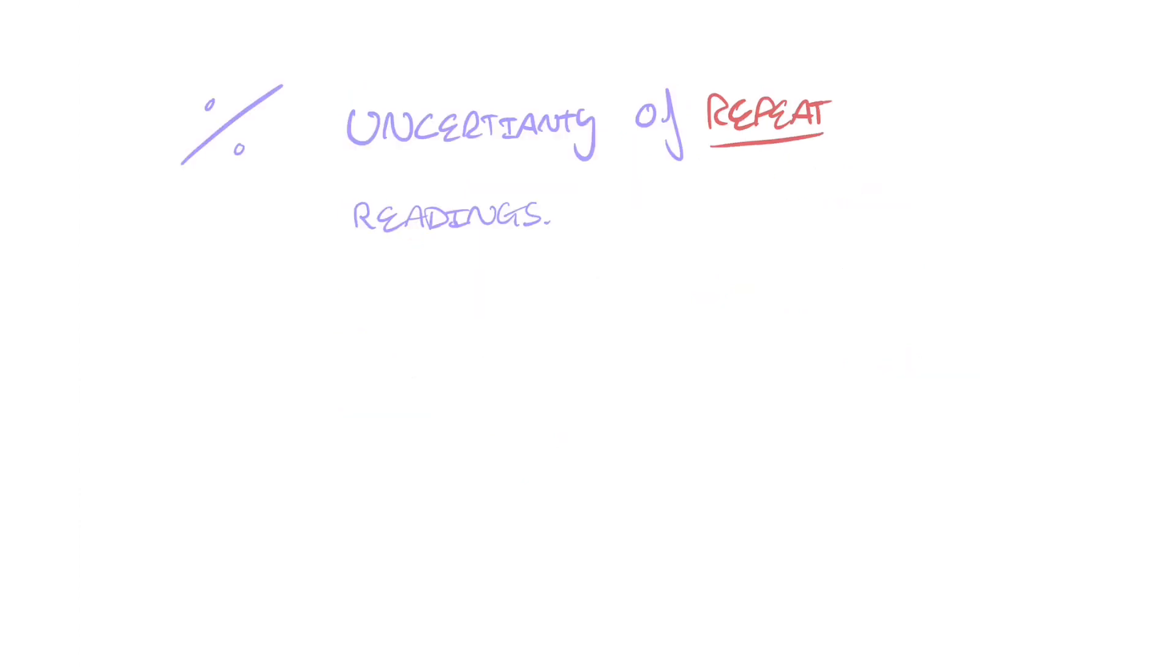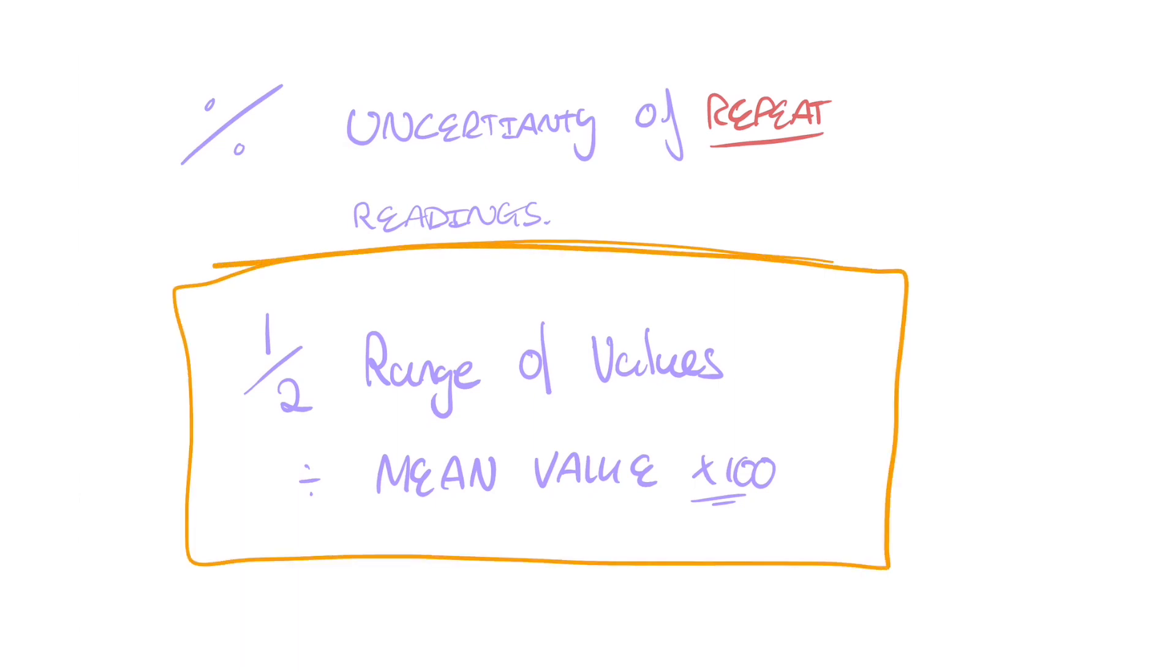We often have to find percentage error of a repeated reading though, as we try to reduce random errors. We do this by dividing half the range of the values by the mean value. Then again, times it by 100 to get the percentage.